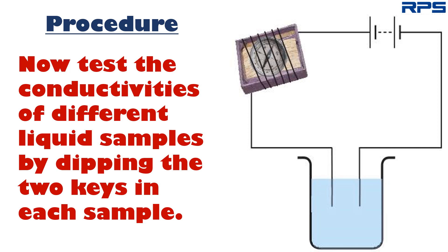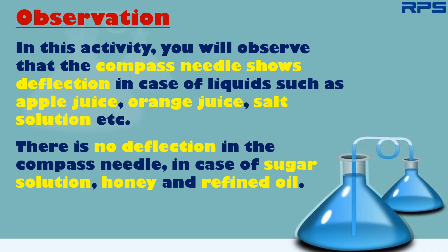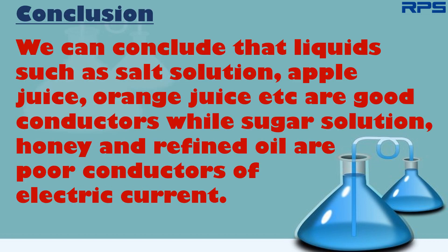Now test the conductivities of different liquid samples by dipping the two keys in each sample. You will observe that the compass needle shows deflection for liquids such as apple juice, orange juice, and salt solution. There is no deflection for sugar solution, honey, and refined oil. So we can conclude that salt solution, apple juice, and orange juice are good conductors, while sugar solution, honey, and refined oil are poor conductors of electric current.